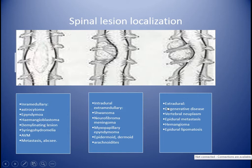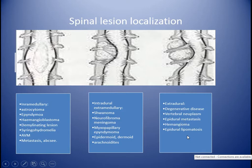Extradural means outside the dura. It will compress the CSF and the cord and form an obtuse angle with the CSF. The most important differential diagnoses of extradural lesions include degenerative disease including herniated disc and osteophyte, vertebral neoplasm, epidural metastasis, hemangioma, and epidural lipomatosis.